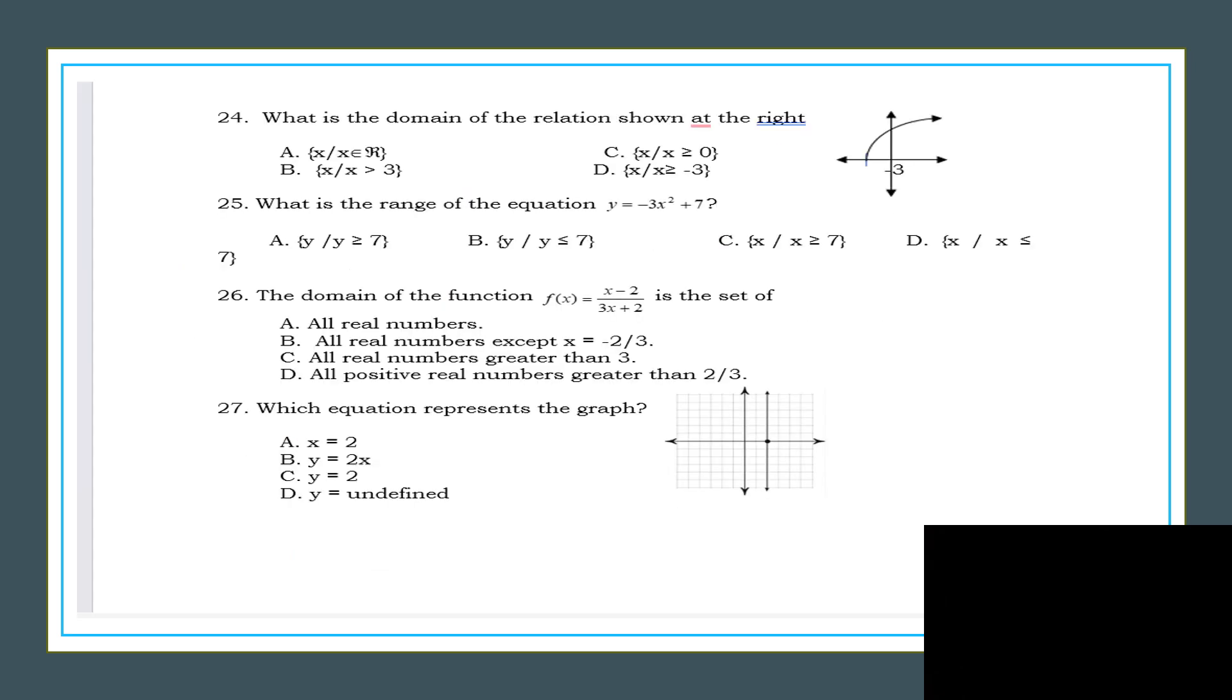Next, number 24. What is the domain of the relation shown at the right? So what do you mean the domain of this? Okay, so the answer is B, x such that x is greater than or equal to negative 3. Yes, it says here.